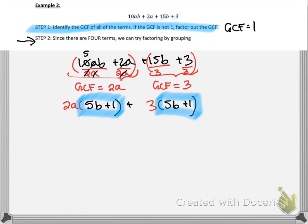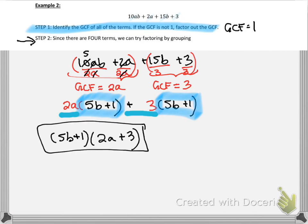So once again, you can see that 5B plus 1 is the same as 5B plus 1. That's not terribly surprising. So since those are the same, we can factor that out. So we pull out the 5B plus 1. And then what's left over? Well, we have a 2A here and a plus 3 here. So that's what's left over inside of our parentheses. And that is our final answer.